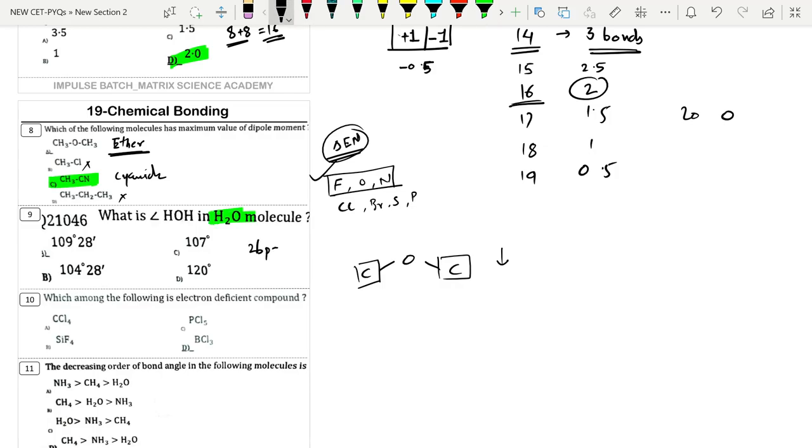Bond angle in H2O molecule: for H2O we have two bond pairs plus two lone pairs, and for this bond angle comes out to be 104 degrees. 109 is for four bond pairs, 107 is for three bond pairs and one lone pair, and 120 when we have three bond pairs plus zero lone pair.